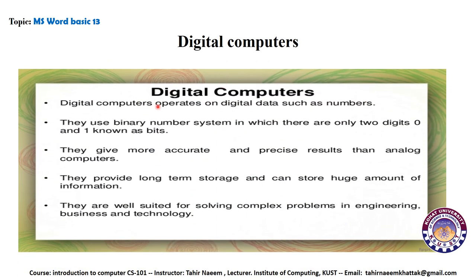Digital computers operate on digital data such as numbers. The key difference from analog is that digital computers operate on discrete data while analog computers operate on continuous data. Digital computers use the binary number system — only two digits, zero and one. Digital computers are more accurate and precise in giving results than analog computers, and they provide long-term storage and can store huge amounts of information. They are well suited for solving complex problems in engineering, business, and technology.